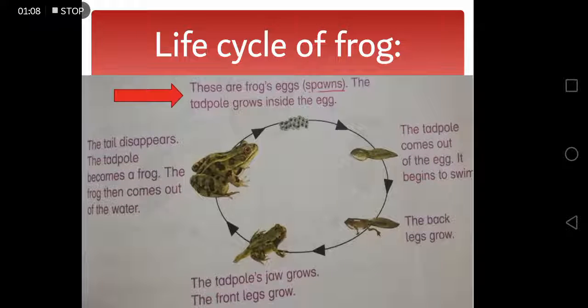So first of all we have the life cycle of a frog. Starting from the arrowhead, these are the frog's eggs which are also called spawns. The tadpole which is a baby frog grows inside the egg, and when the eggs hatch the tadpole comes out of the egg and it begins to swim in water.